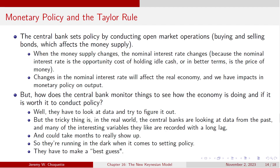The central bank sets policy by conducting open market operations — buying and selling bonds — which then affect the money supply. When the money supply changes, the nominal interest rate changes because the nominal interest rate is the opportunity cost of holding idle cash — it's the price of money. So if the amount of money changes, the price of money changes. Changes in the nominal interest rate then affect the real economy because inflation can't fully respond. So if inflation can't respond, the real interest rate has to move a little bit. Therefore, monetary policy can have effects on output via movement in the real interest rate.